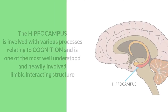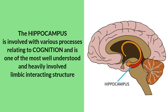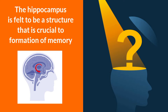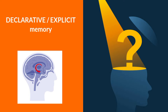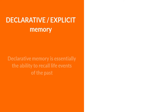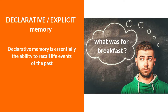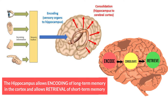The hippocampus is involved with various processes relating to cognition and is one of the most well understood and heavily involved limbic interacting structures. Unlike the six-layered neocortex, the hippocampus only has three layers and is termed the archicortex. The hippocampus is crucial to the formation of memory — more specifically, a type of memory called declarative or explicit memory. Declarative memory is essentially the ability to recall life events of the past, such as what meal was eaten for breakfast or where the car is parked. The hippocampus allows encoding of long-term memory in the cortex and allows retrieval of short-term memory.